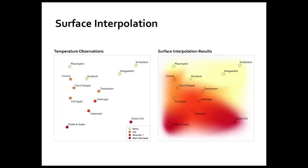One problem you can see is in the southeast part of this map where there aren't many data points. What if there's a mountain between Catterwall and Ghost Chili, or between Catterwall and Dulles-A Gates? If there were a high elevation point, it could be that temperatures are actually lower between those spots. This is where the uncertainty associated with geographic data comes into play.